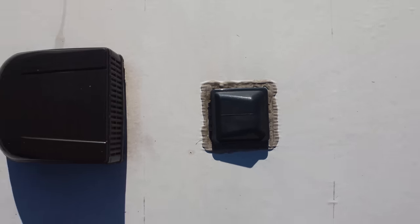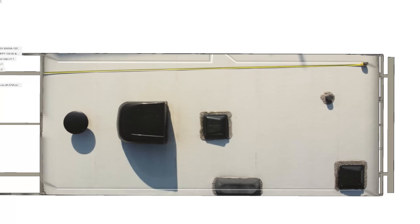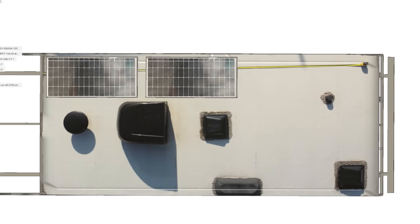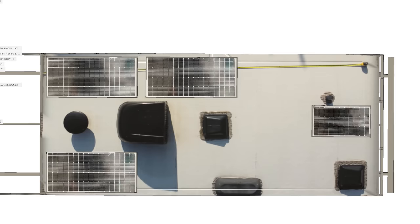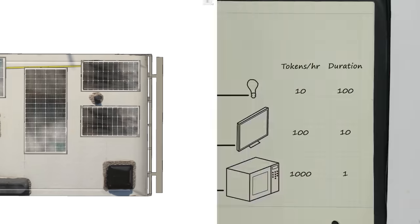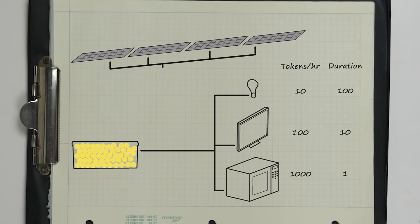To figure out the solar panels, I flew my drone over the trailer and took a picture with a tape measure on top. It showed I can fit panels rated for a thousand tokens per hour on my roof. So at peak output, I could charge a thousand token battery in just one hour.